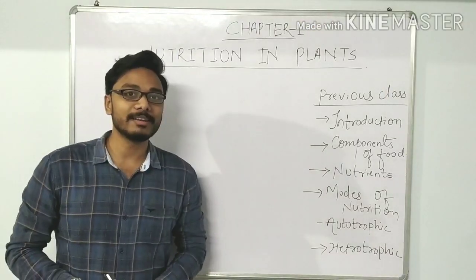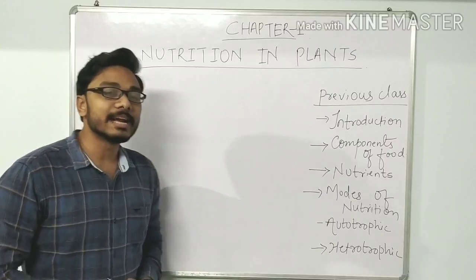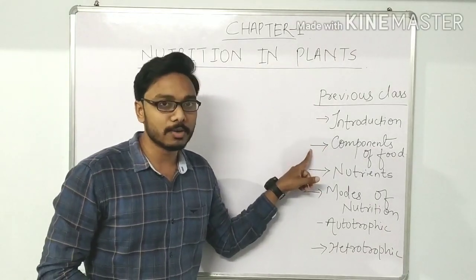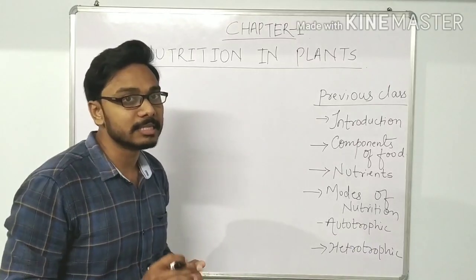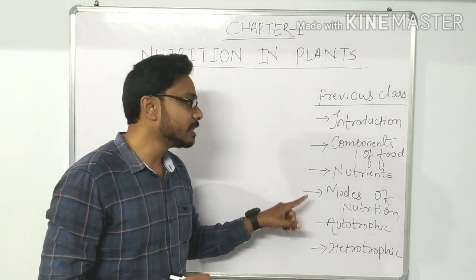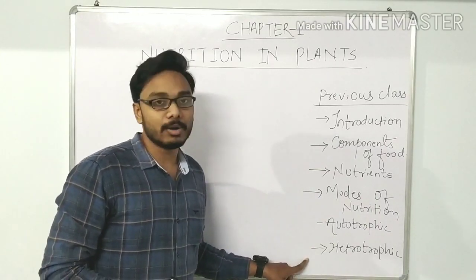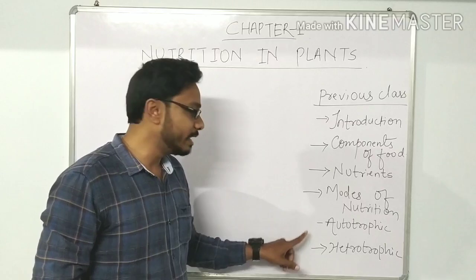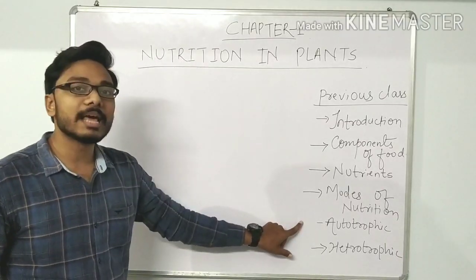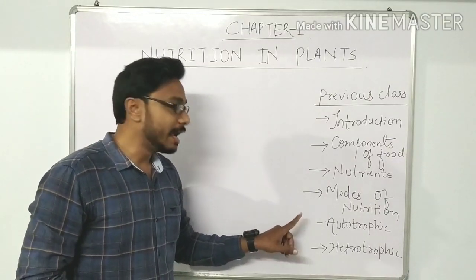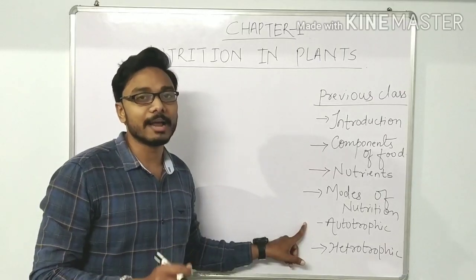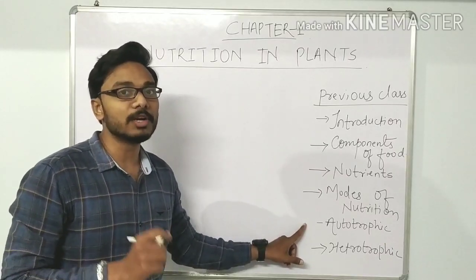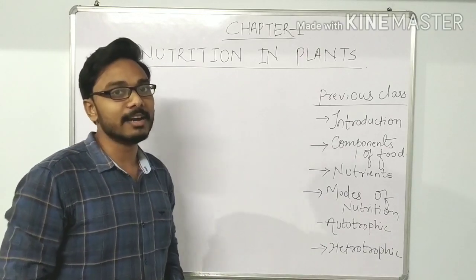Hello students, hope you all are fine and doing well. This is the second part of our first chapter, that is nutrition in plants. In the previous classes we studied about the introduction, components of food — carbohydrates, proteins, fats, vitamins, minerals — and the modes of nutrition: autotrophic and heterotrophic. Green plants make their own food using carbon dioxide, water, sunlight, and chlorophyll, and that process is known as photosynthesis. In this video we will talk about photosynthesis in detail.